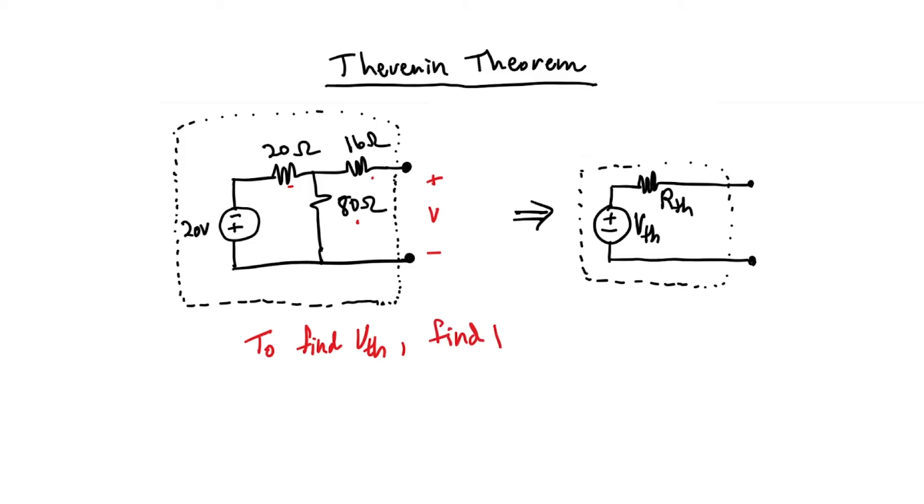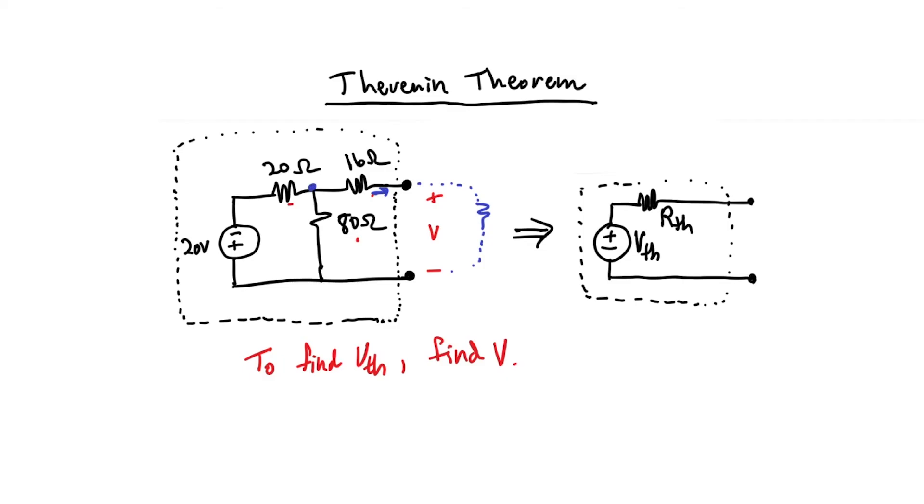Without any load attached, we just need to find V. How would we do that? So in this circuit, if there's no load attached, meaning there's no resistor attached over here, then there's no current flowing through the 16-ohm resistor. If I want to know what the voltage V is, let me draw this little circuit fragment. We have an 80-ohm resistor. But you see, without any current flowing through the 16-ohm resistor, there's no voltage drop across the 16-ohm resistor. So the voltage here at this node is the same as the voltage here because V equals IR and the current I equals zero. Therefore, the voltage drop is zero, so this voltage equals this voltage.